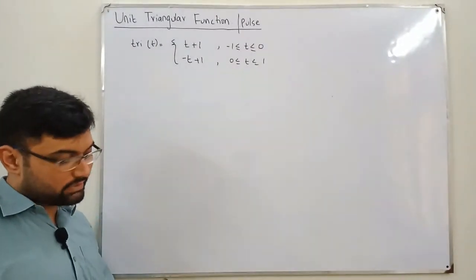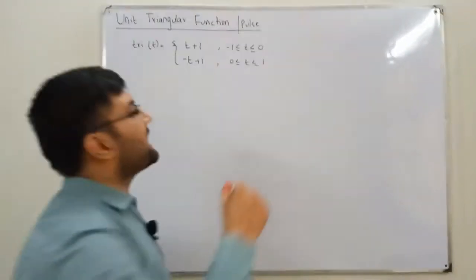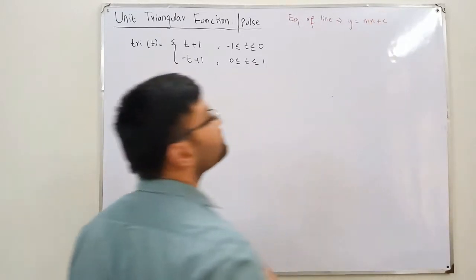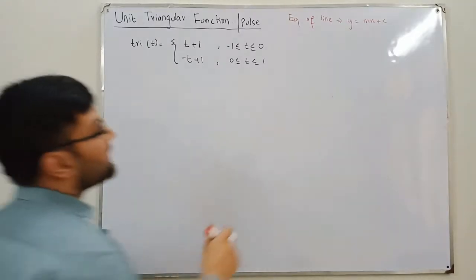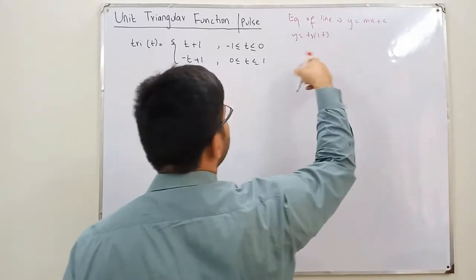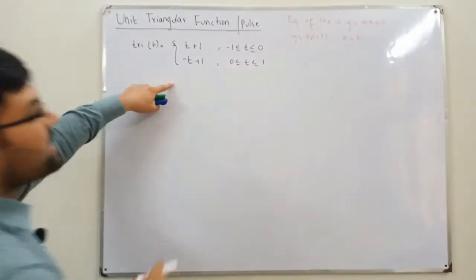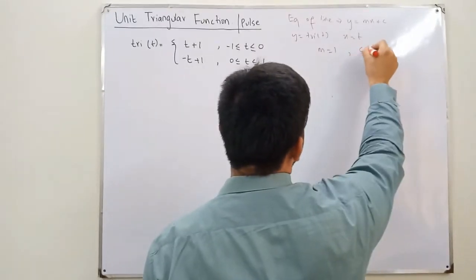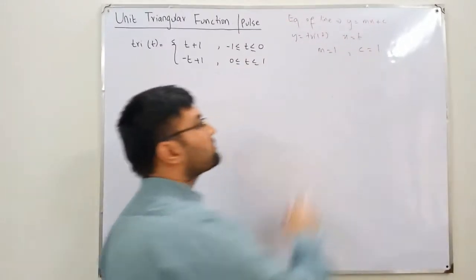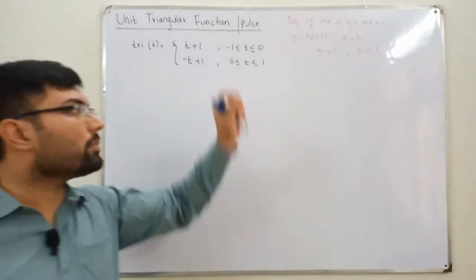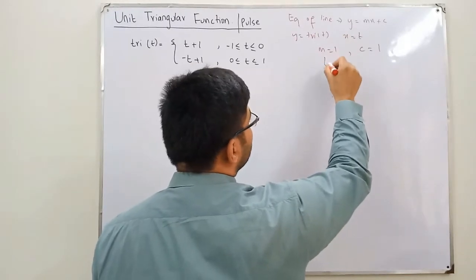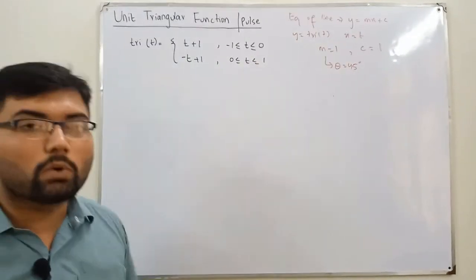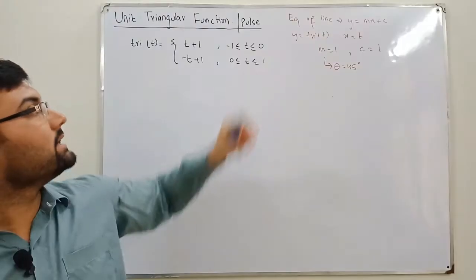To draw the graph properly, let me first prove it. From the equation of a line, y = mx + c, in our case y is tri(t) and x is t. For the first equation, m = 1, which means the slope is 1. The y-intercept c is also 1. A slope of 1 means tan(θ) = 1, which gives θ = 45 degrees — so this is a line making 45 degrees.